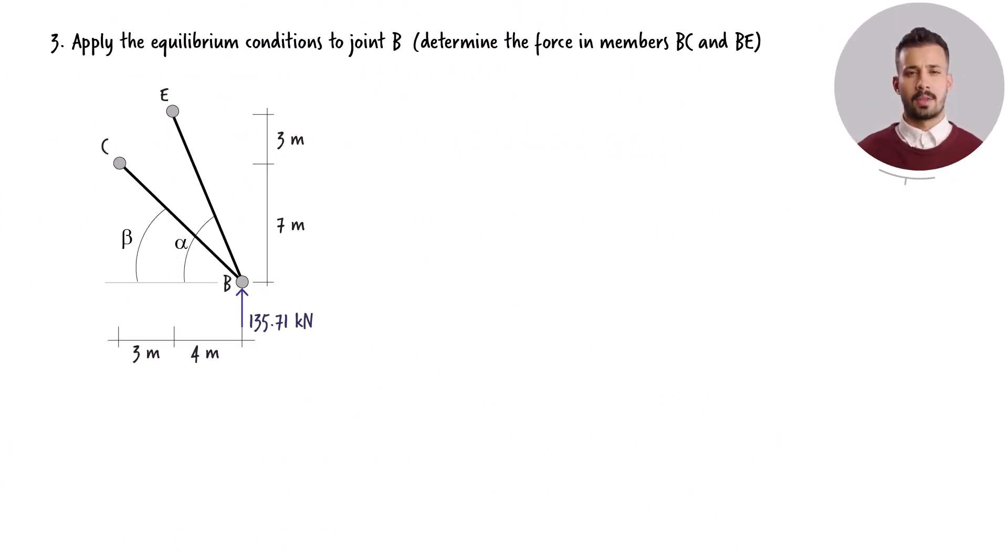Joint B connects members BC and BE. The angles at which these members intersect the horizontal axis can be calculated in a manner similar to the previous step.